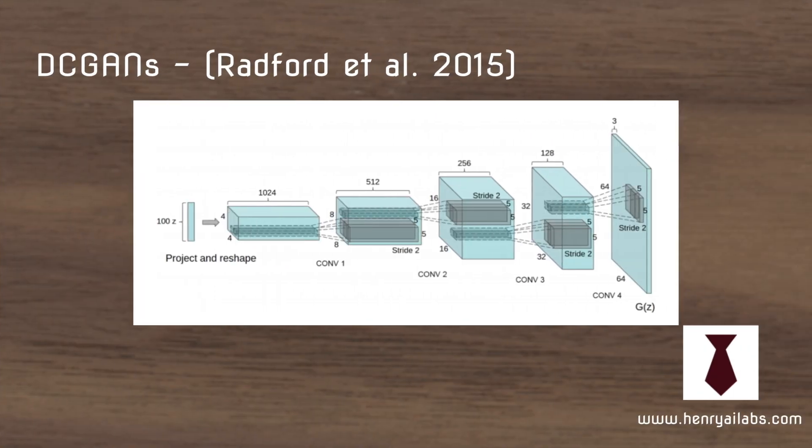The first paper in the list is DC GANs from Alec Radford et al. This paper builds on the original GAN idea by showing how you can use upsampling convolutional layers in the generator and regular convolutional layers in the discriminator, extending the architectural and neural network complexity of the GAN models. It also proposes additional guidelines such as using batch normalization, as well as ReLU and leaky ReLU activation functions.